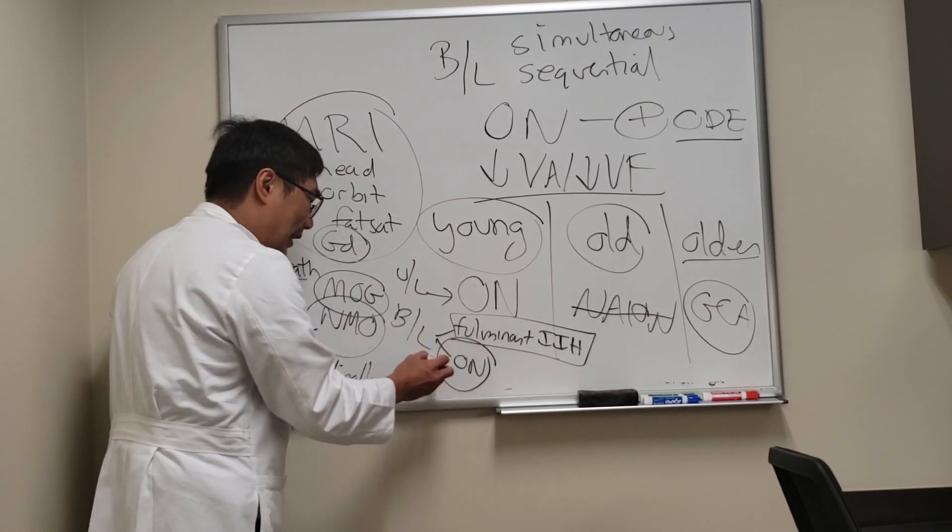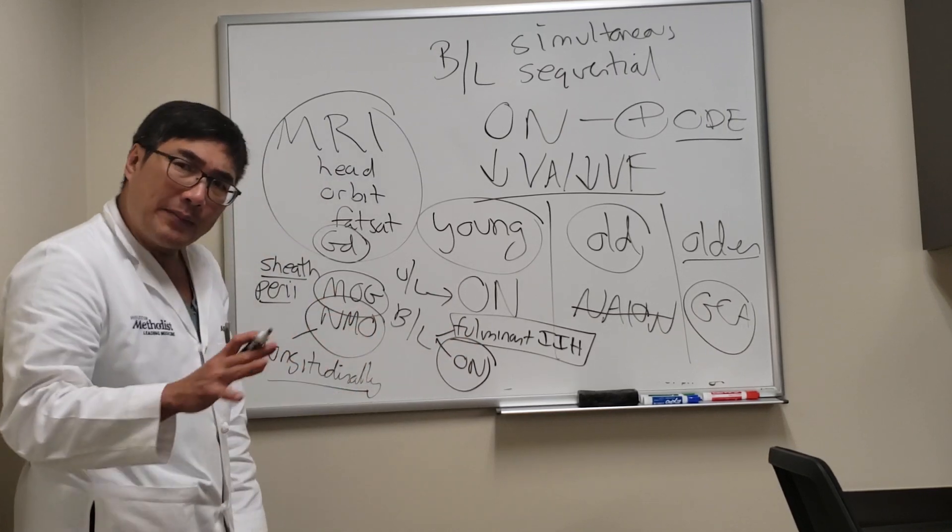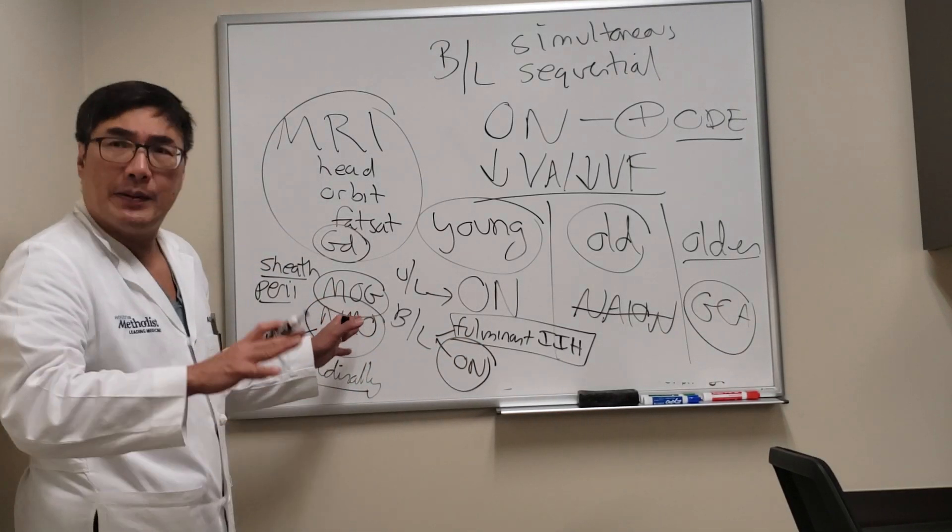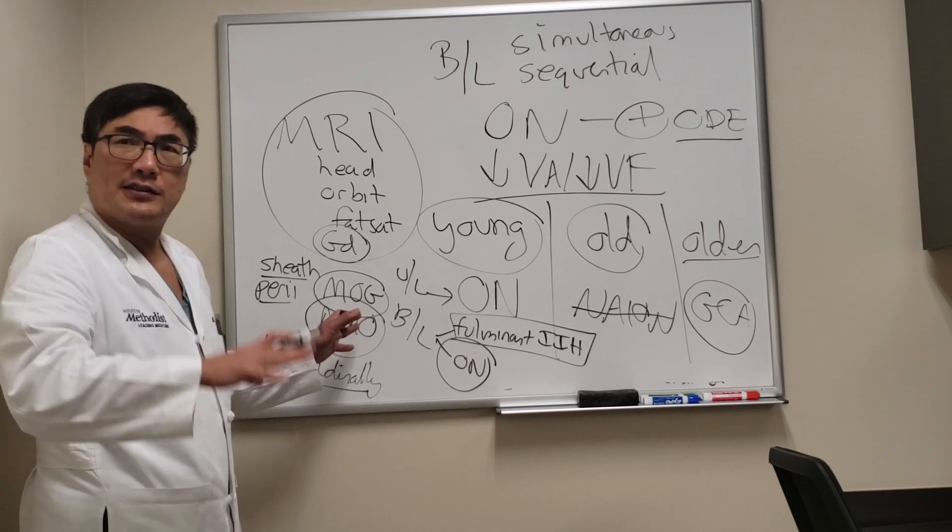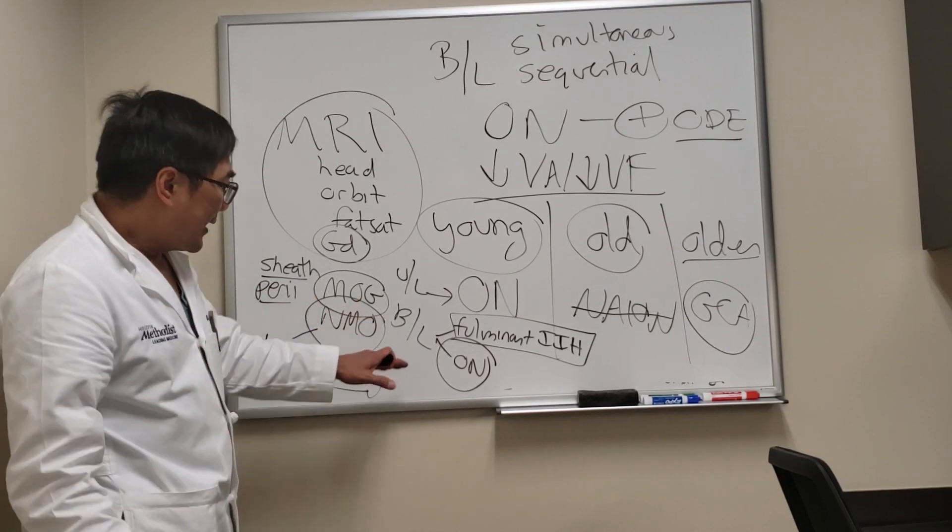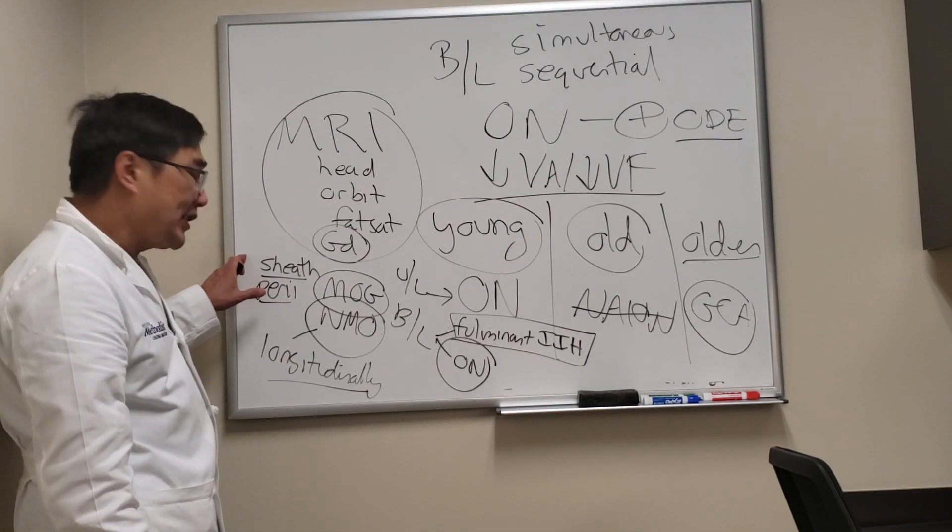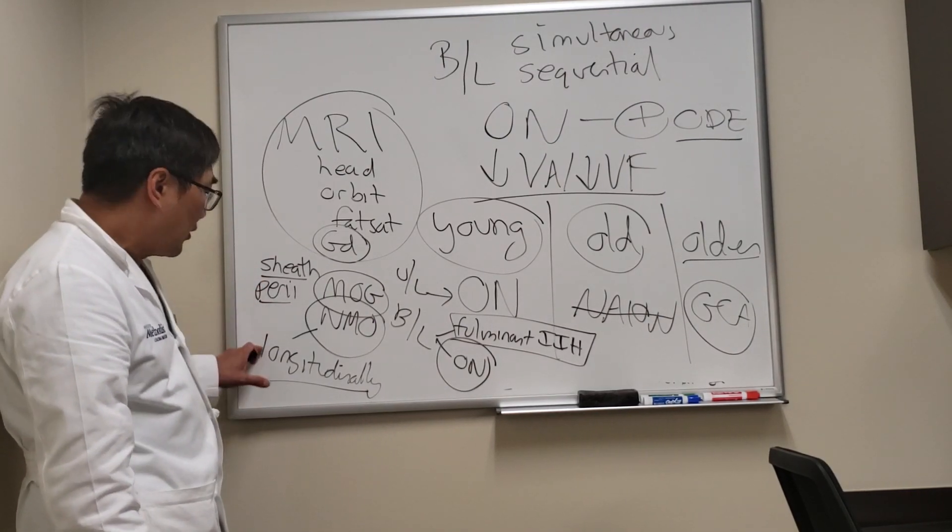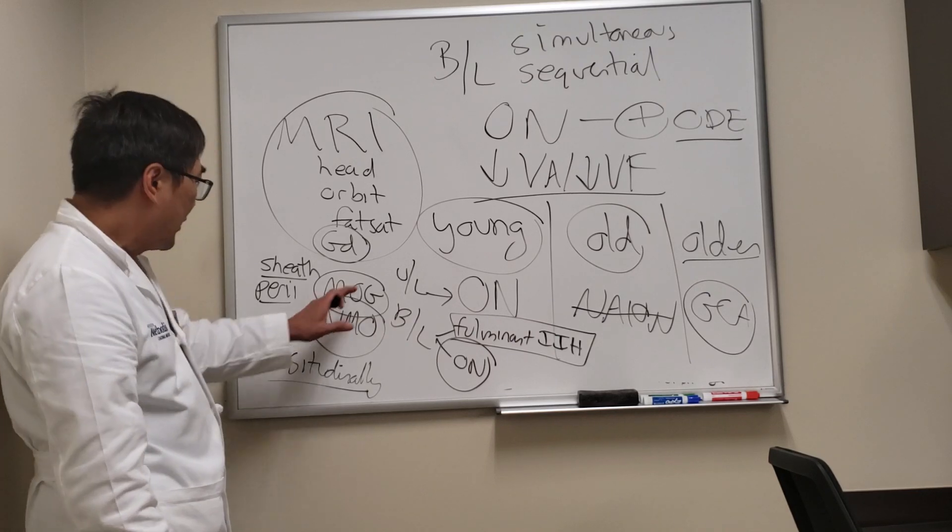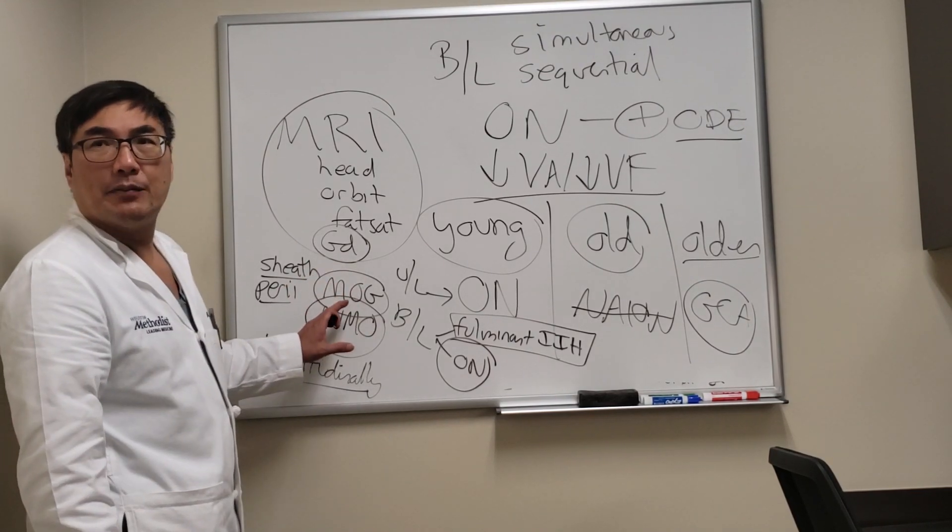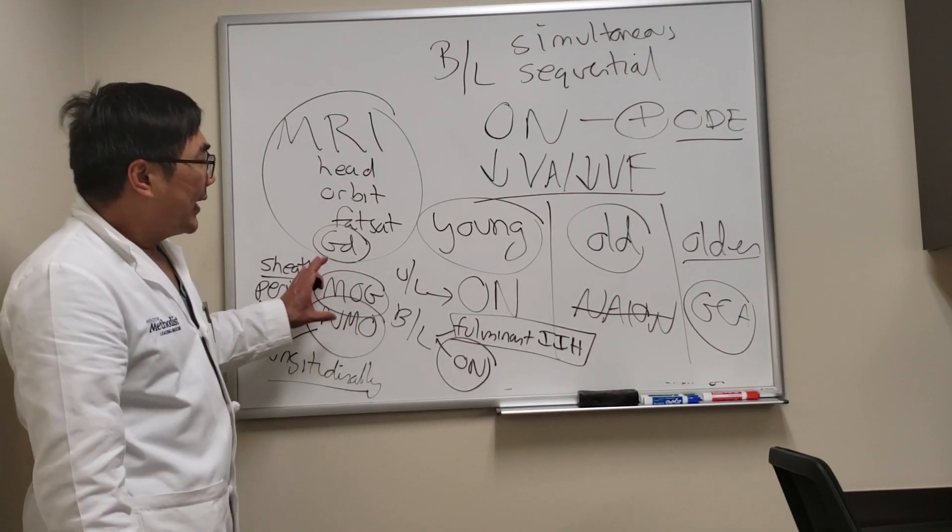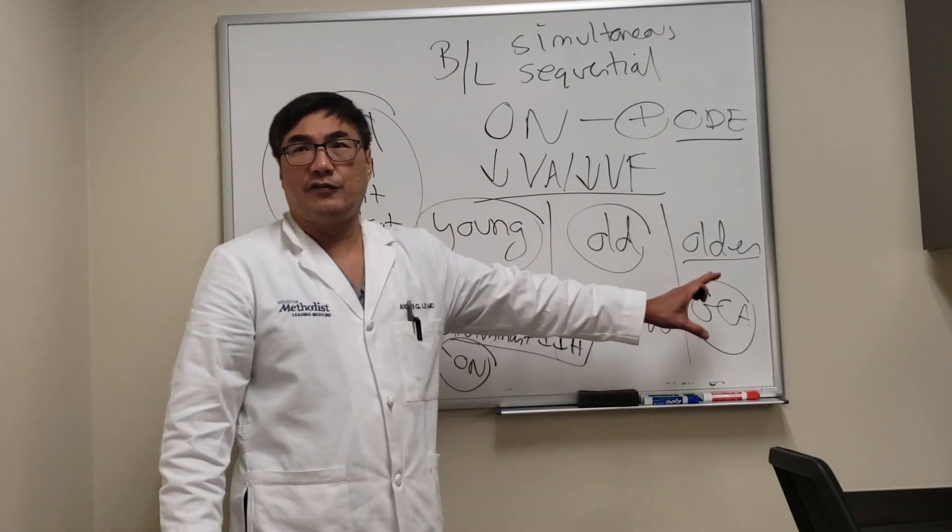If it's this bilateral optic neuritis it still could be MS, but you got to be thinking about the MS mimics: sarcoidosis, syphilis, lupus, the usual things, and the MS-like illnesses, the antibody-mediated forms. If we see sheath enhancement or perineuritis or longitudinally extensive enhancement, really you're in the MOG-NMO spectrum. All these patients need intravenous steroids.